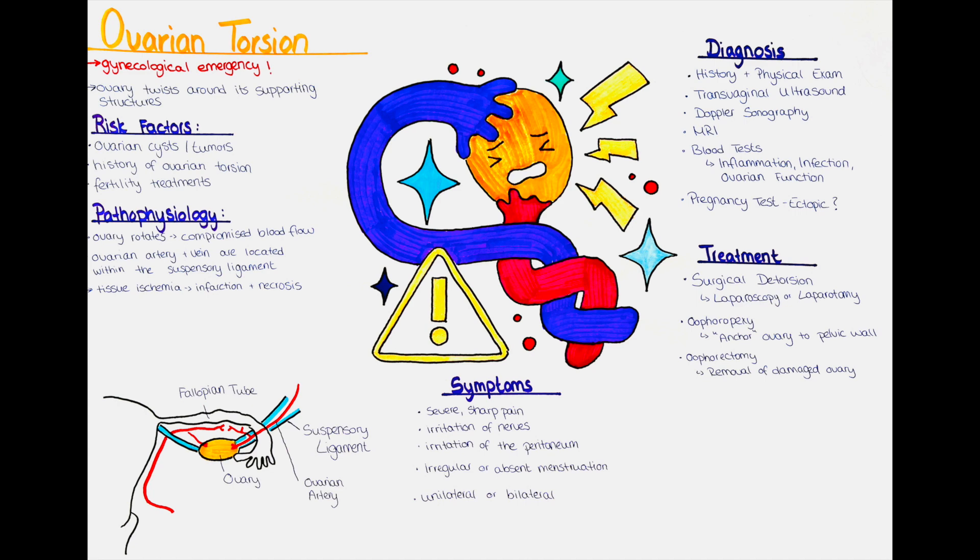It contains the ovarian vessels, lymphatic vessels and nerves that supply the ovary. The suspensory ligament of the ovary extends from the ovary to the pelvic side wall, passing over the external iliac vessels. It provides support and allows for the movement and mobility of the ovary within the pelvic cavity.